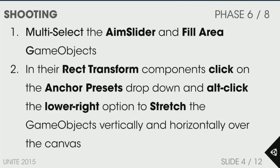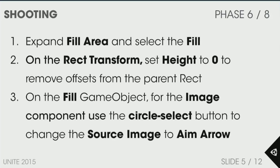To recap: we selected aim slider and fill area and stretched them over the canvas parent using Alt-click. Then we expanded fill area, selected fill, set height to zero to remove the offset from the parent rect, and used circle-select on the fill's image component to choose the aim arrow.